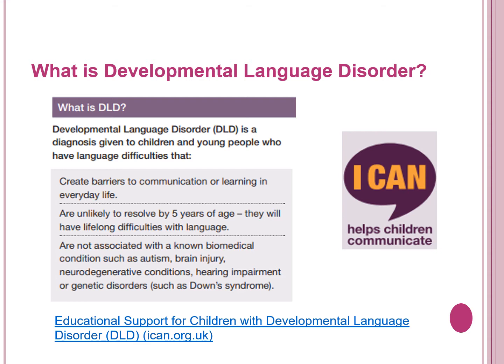In order for a child to receive a diagnosis of Developmental Language Disorder, their difficulties must be affecting their learning or their ability to communicate with other children or adults. The speech therapist must also feel that their difficulties are likely to be ongoing, which is quite likely if they are five years old or older, and they must not have another condition or disability. If the child does have a biomedical condition or disability too, instead of DLD, it is likely that they would be diagnosed with language disorder. We will explain this more in the following slide.